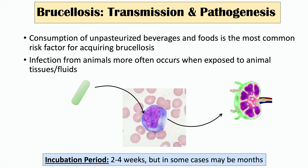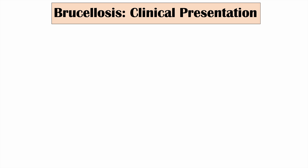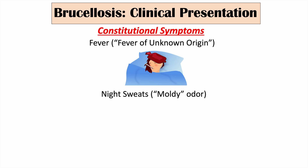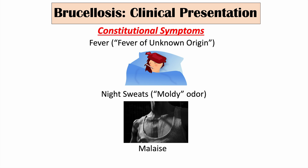Once the bacteria is taken up by an immune cell, it is carried to the lymphatic system, where it can reside for two to four weeks, or in some cases much longer. The symptoms are often constitutional and nonspecific, including fever — brucellosis can be an important cause of fever of unknown origin — night sweats with a notable moldy odor, malaise, and weight loss.